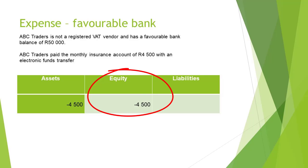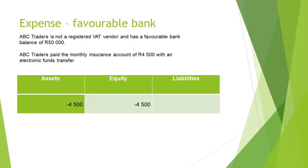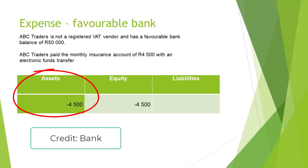An expense decreases equity. Equity will therefore have an entry of minus 4,500 rand and the insurance account will be debited with 4,500 rand. On the other hand, bank is an asset because it had a favorable bank balance. The asset account will therefore decrease because money flowed out of the bank, decreasing the cash. The bank account will be credited and assets will reduce by 4,500 rand.